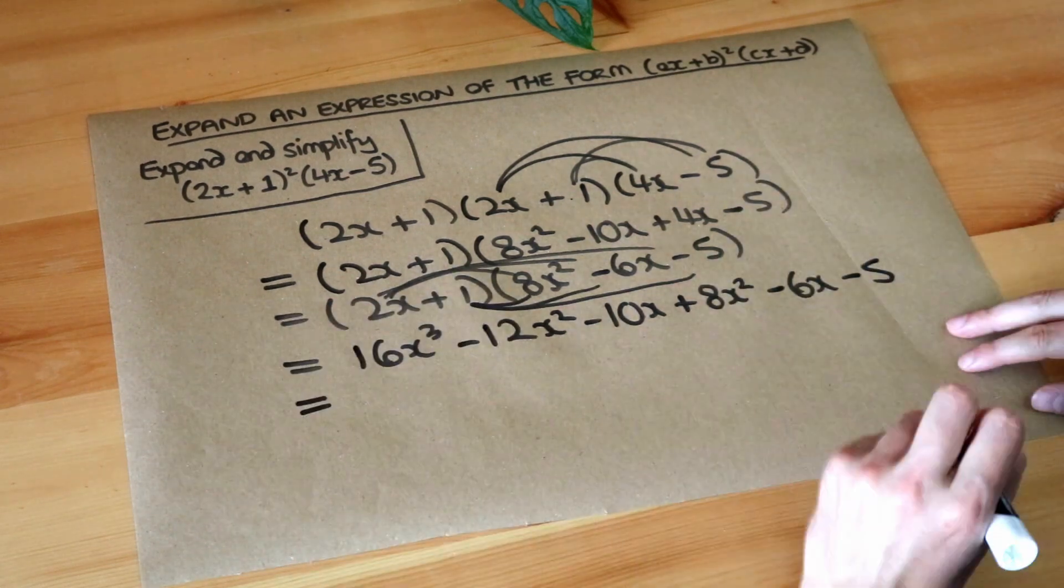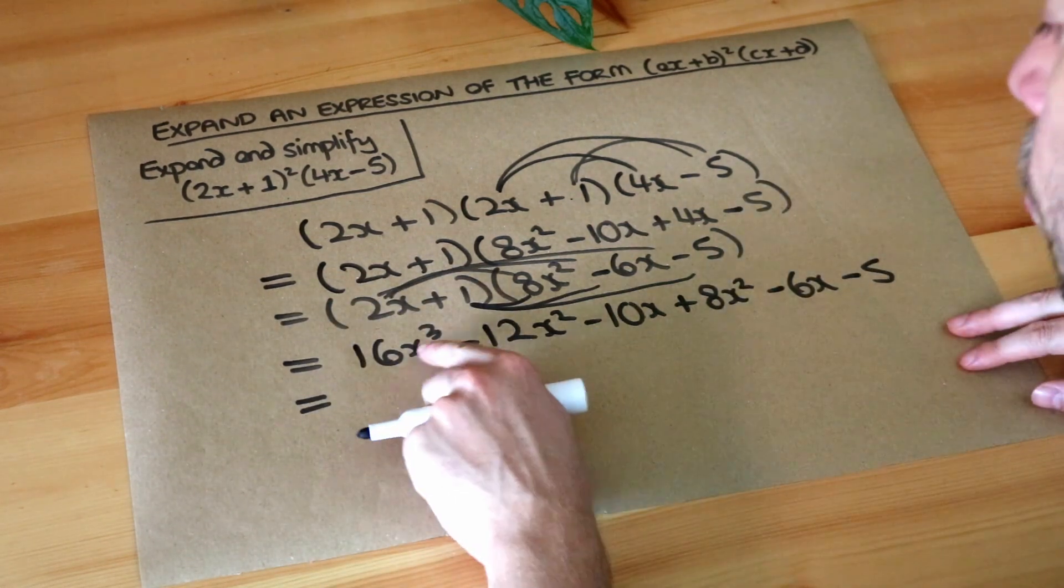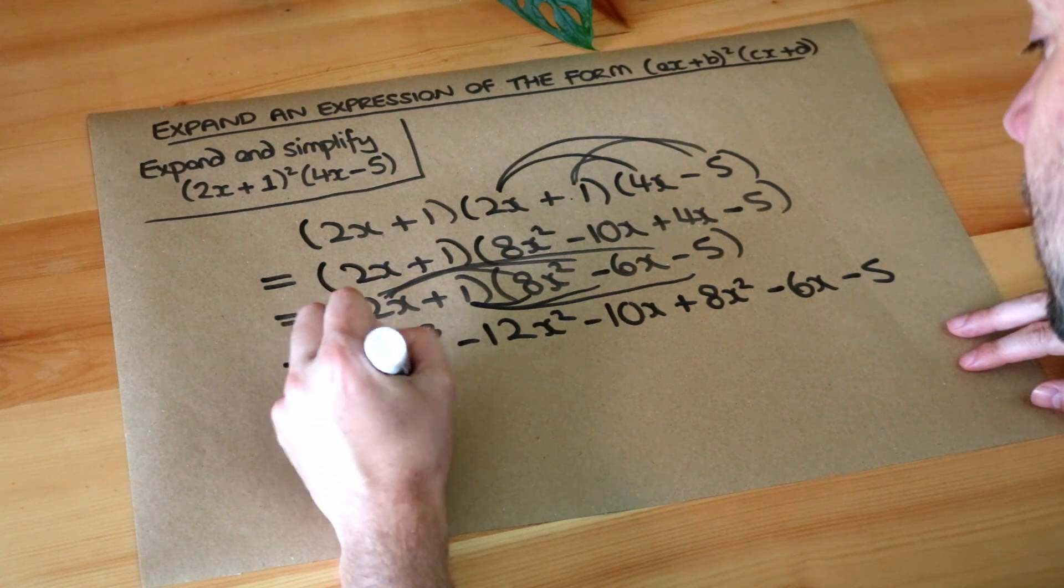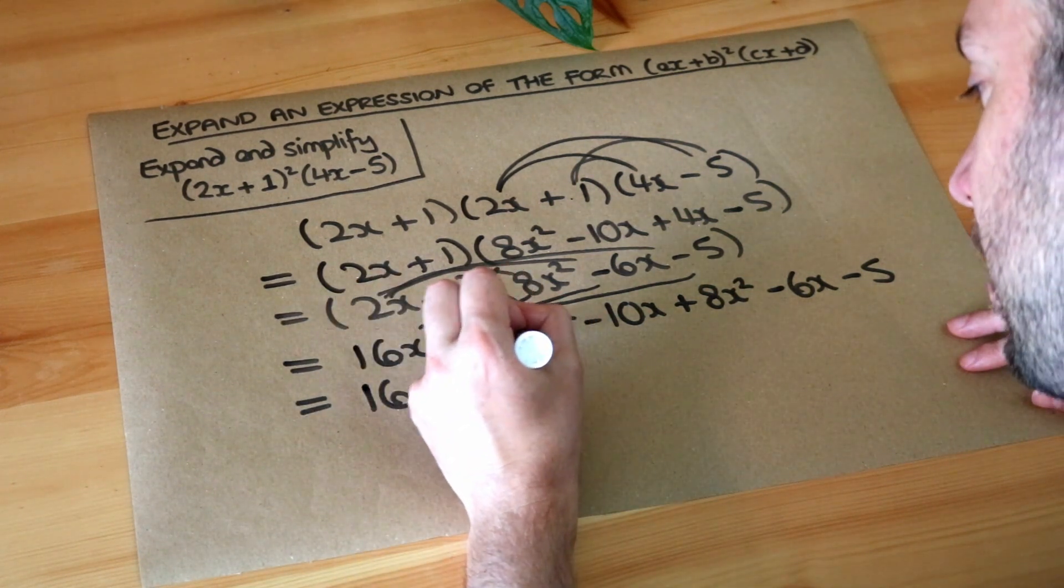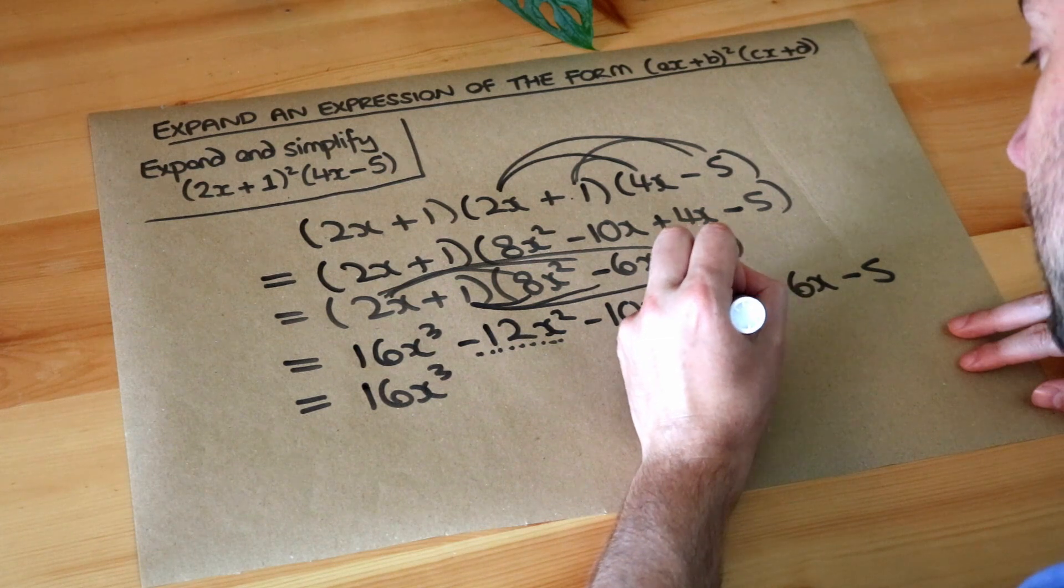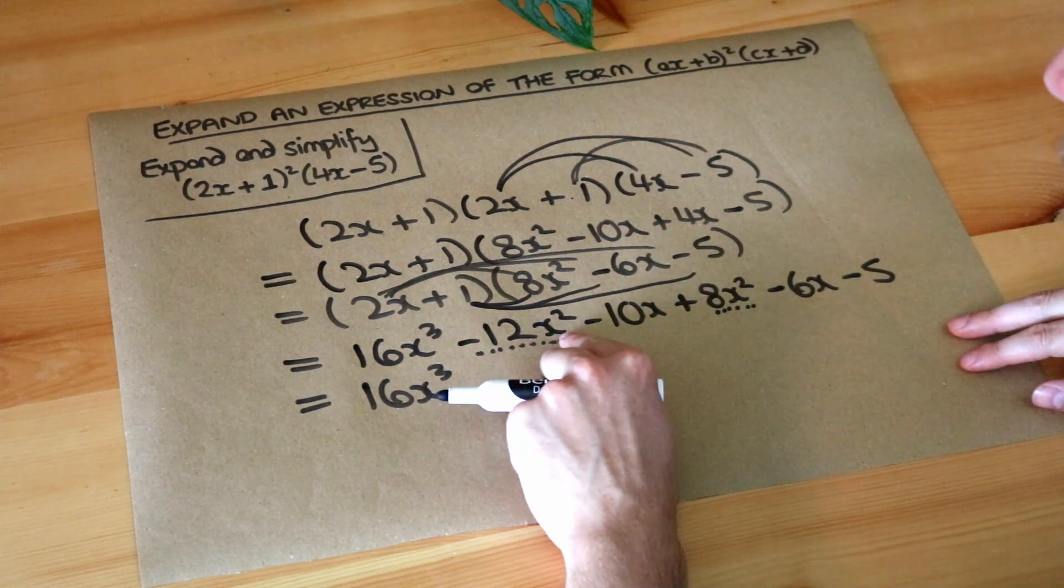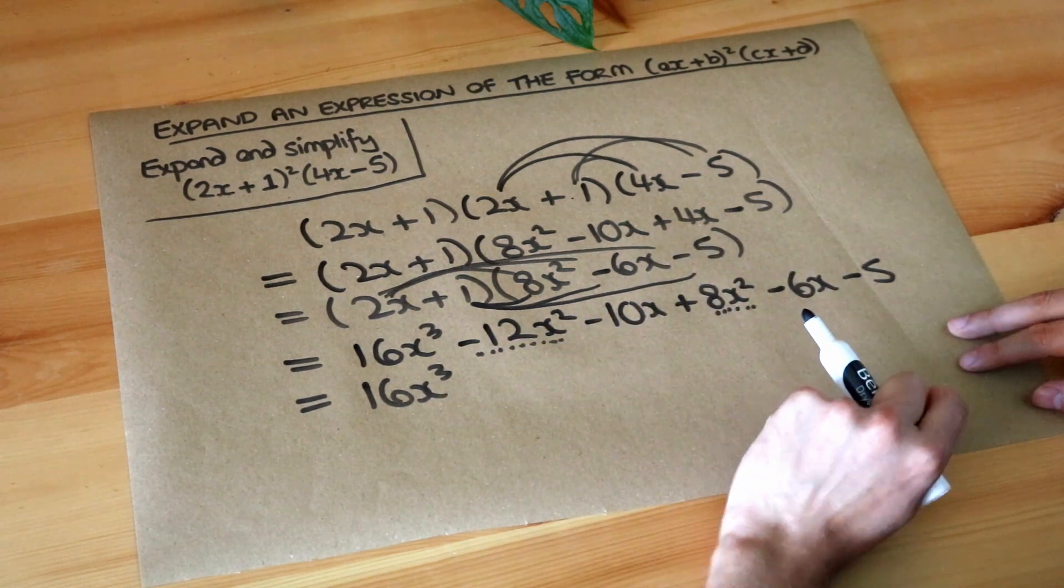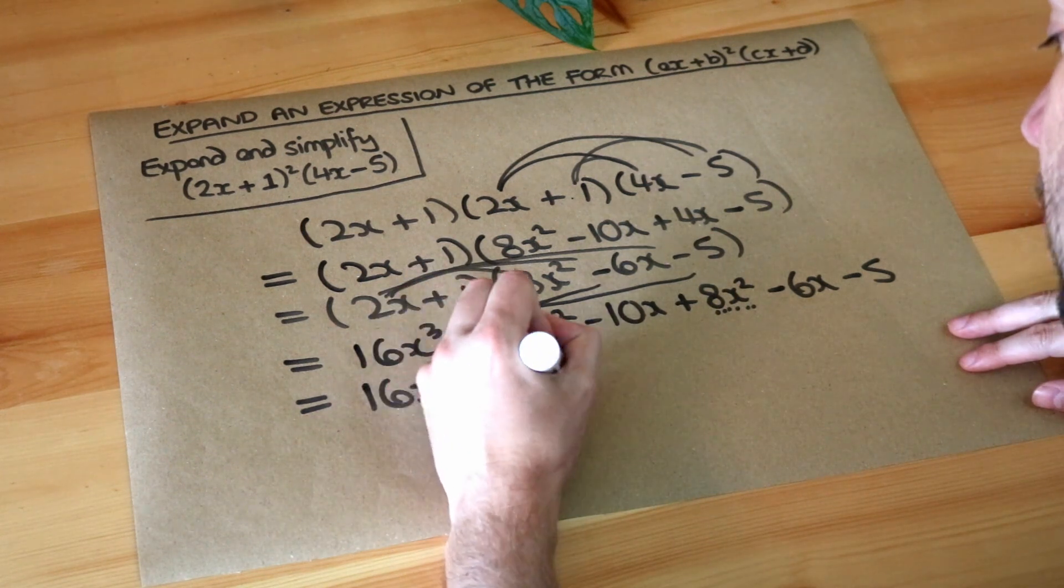And then we collect like terms again. Now we've only got one x cubed term here, so it's the 16x cubed. But we've got an x squared term here and an x squared term here. Minus 12 lots of x squared plus 8 lots of x squared is minus 4 lots of x squared.